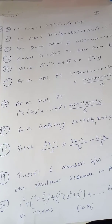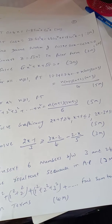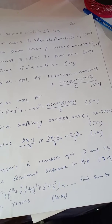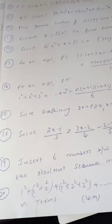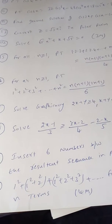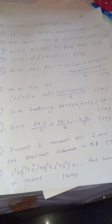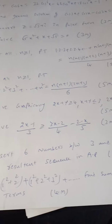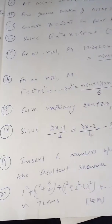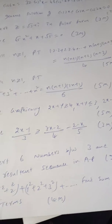Question number 17. Solve graphically 2x plus y greater than or equal to 4, x plus y less than or equal to 3, 2x minus 3y less than or equal to 6. It is a 5 mark question. Question number 18, solve 2x minus 1 by 3 greater than or equal to 3x minus 2 by 4 minus 2 minus x by 5. It is a 3 mark question in linear inequalities chapter. Question number 19, insert 6 numbers between 3 and 24. The resultant sequence is in AP. It is a 3 mark question in sequence series chapter.